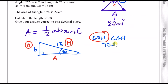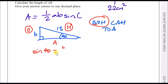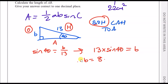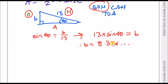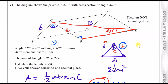According to SOH, sine of 40 equals the opposite B over the hypotenuse 13. To find B, we rearrange to make B the subject, multiplying 13 across: B equals 13 times sine 40. Putting this in a calculator gives a B value of 8.356, so we update the diagram with CB equal to 8.356.